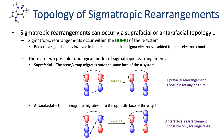While suprafacial rearrangement is possible for transition states of any ring size, antarafacial rearrangement is restricted to reactions with transition states that have relatively large rings, typically eight atoms or larger. For an antarafacial rearrangement, the ring in the transition state needs to be large and flexible enough to allow the group to migrate from one face of the pi system to the other.